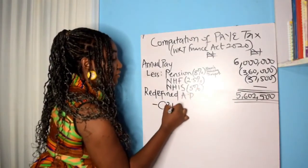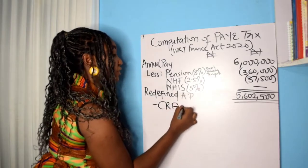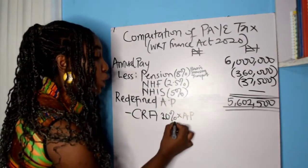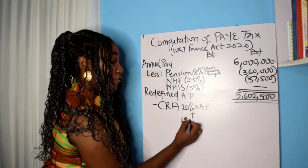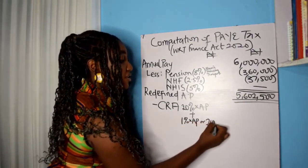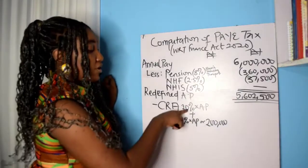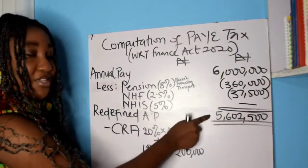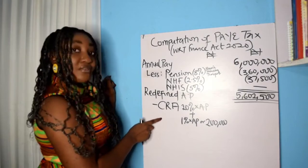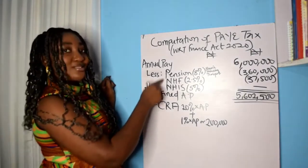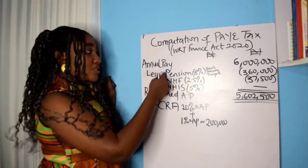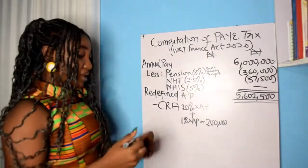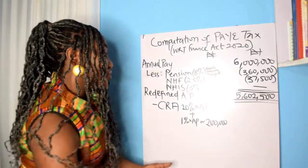So now they give you the Consolidated Relief Allowance. CRA is usually 20% of your annual pay, plus 1% of your annual pay or ₦200,000 — whichever is higher. So 20% of ₦5,602,500 (the redefined annual pay, not the original ₦6 million) gives ₦1,120,500. Then 1% of ₦5,602,500 is about ₦56,000, versus ₦200,000 — so ₦200,000 is higher. This will increase our tax — that's just the whole summary.